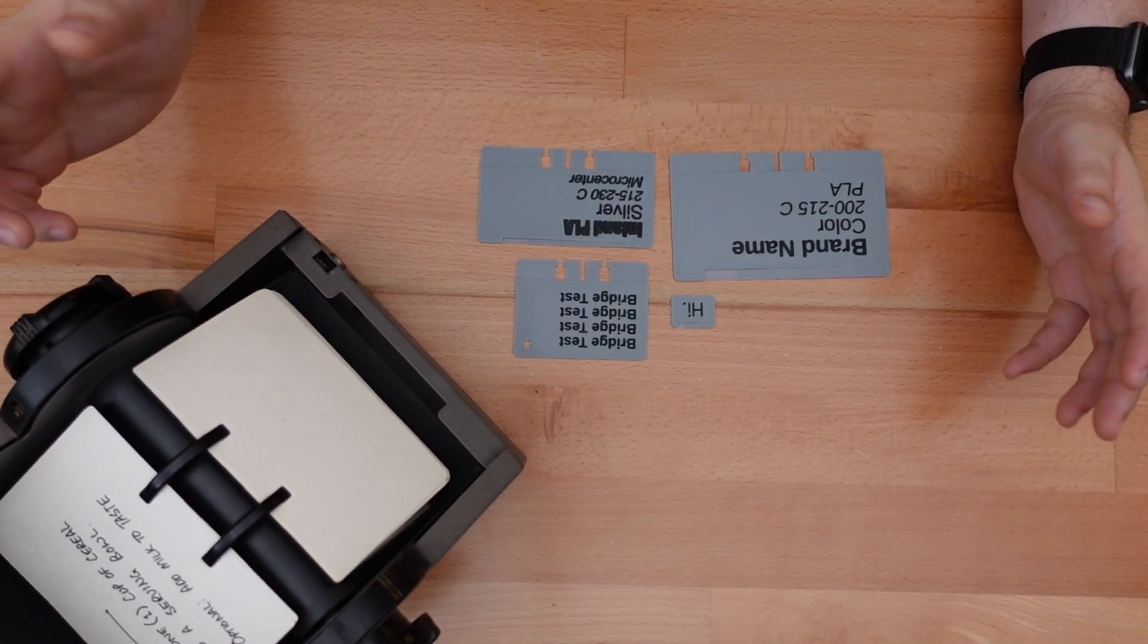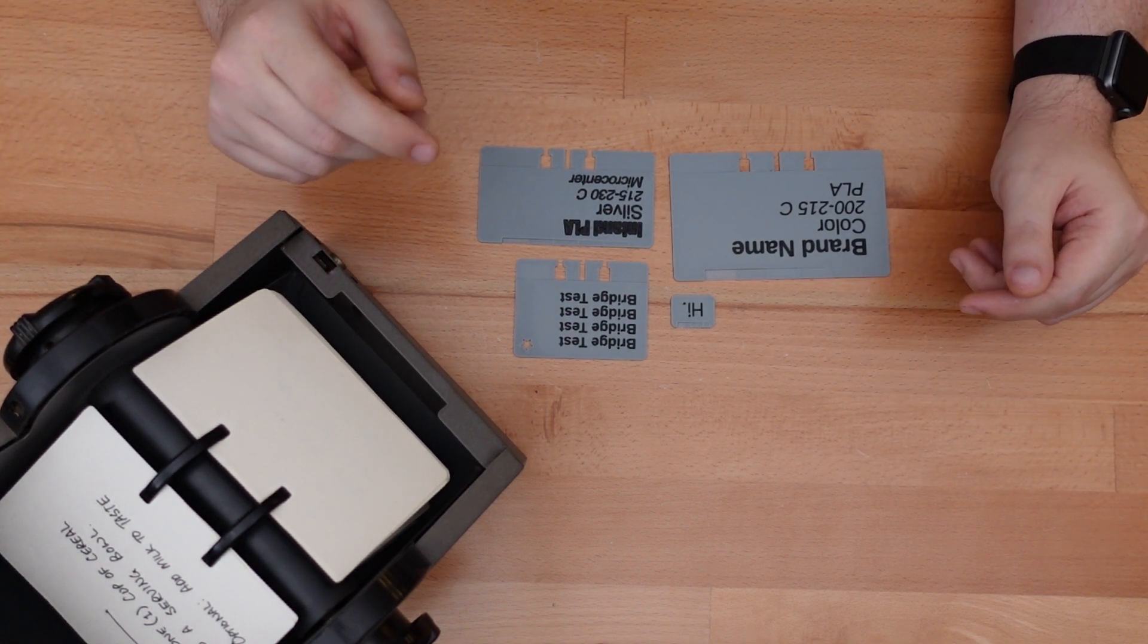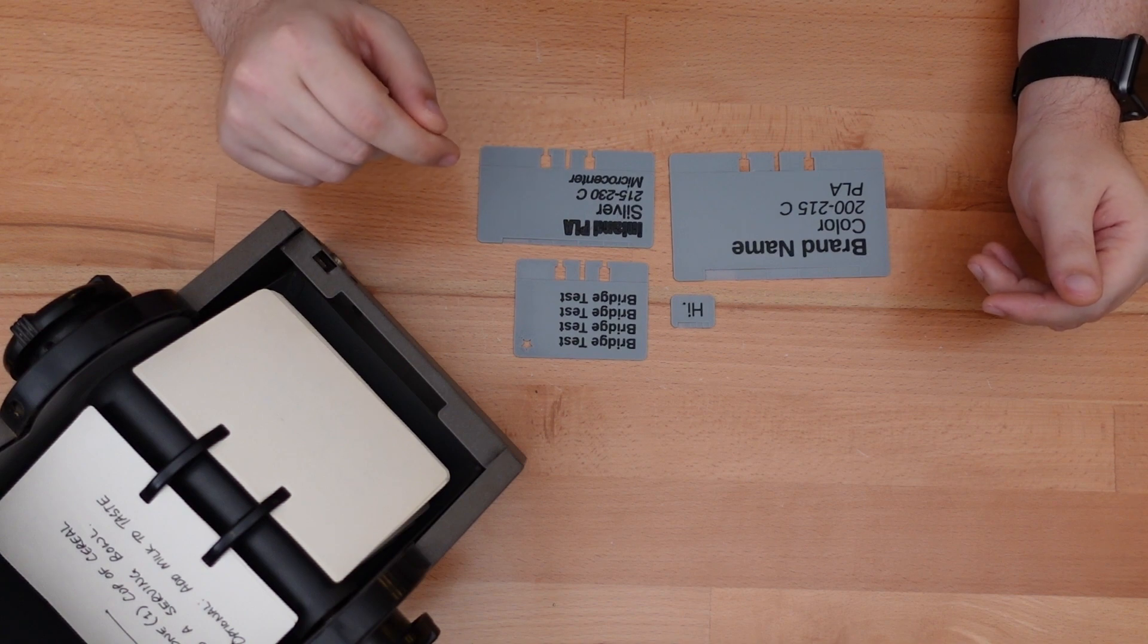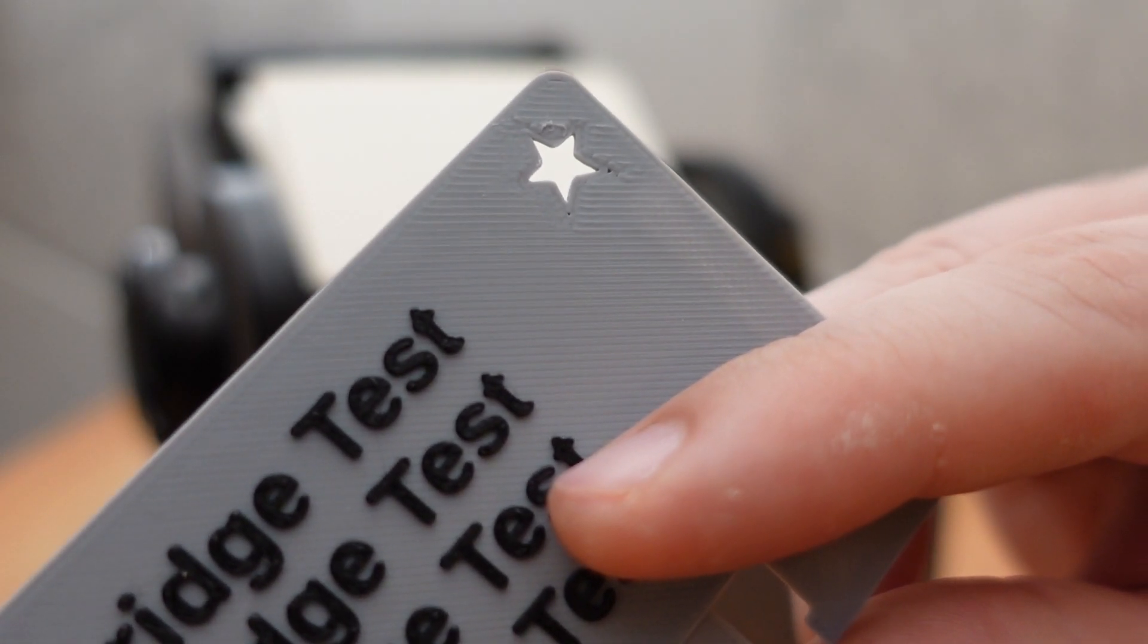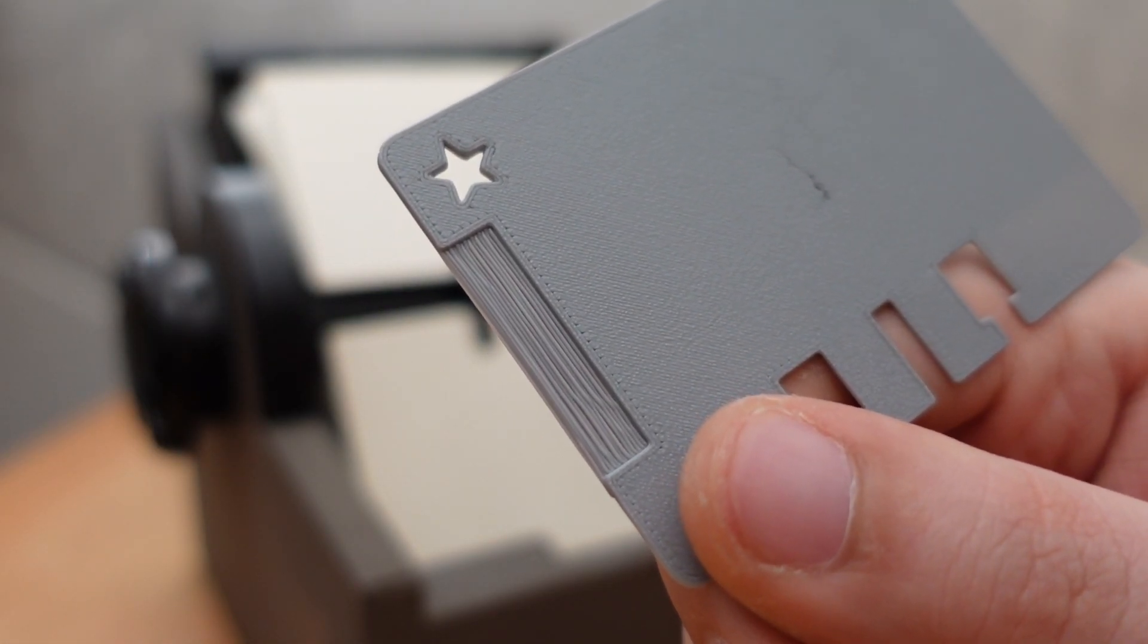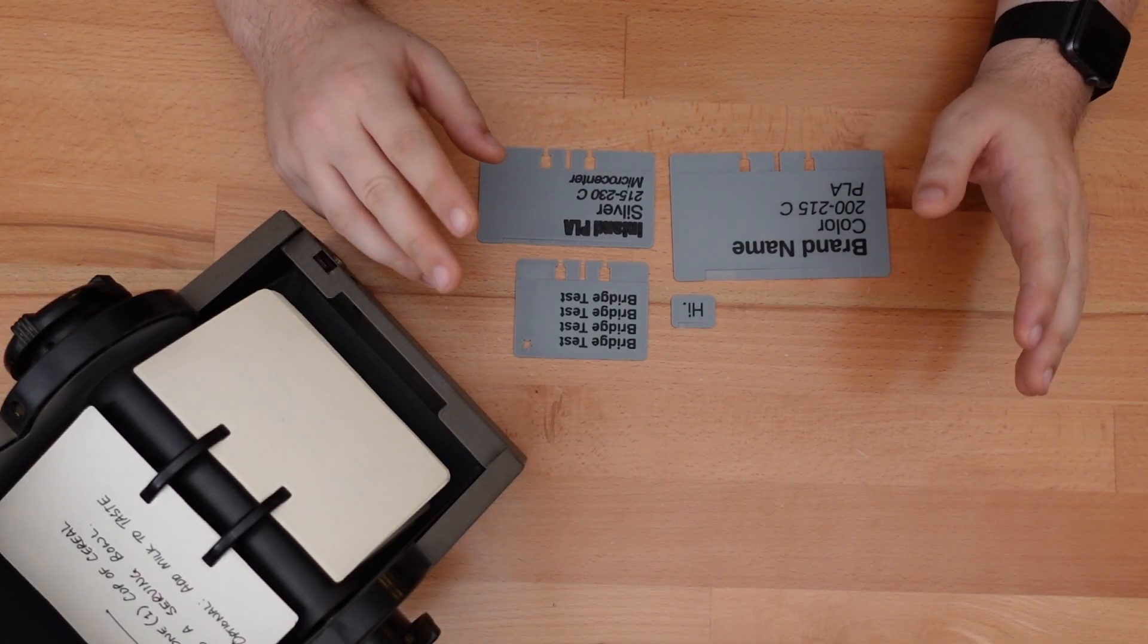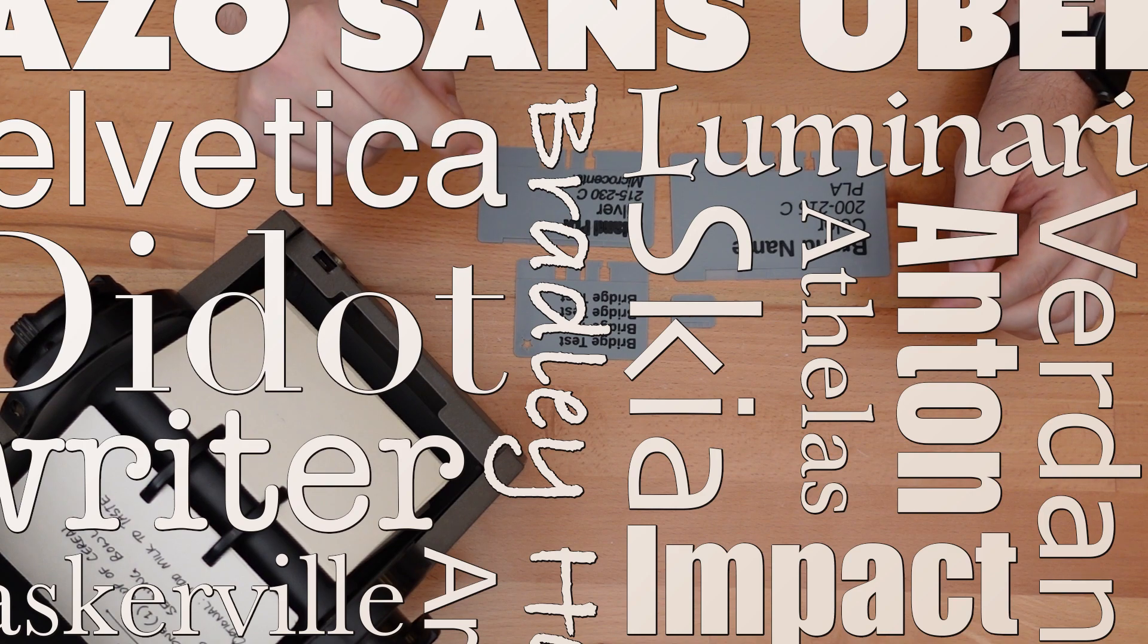My biggest complaint with existing designs was that they tended to force me into a template that I didn't want. That shouldn't be a problem with this design because it supports a ton of customization: an optional star indicator for favorite filaments, an optional bridging test on the back of each swatch, an optional layer height preview, and most importantly, up to 4 lines of text in different fonts, styles, and sizes.